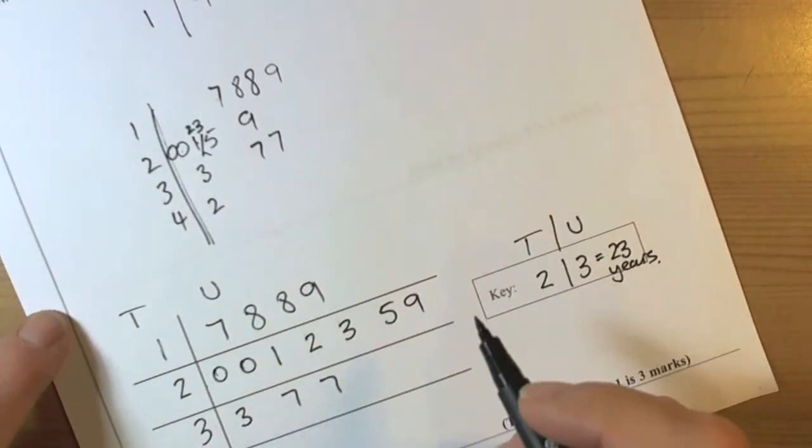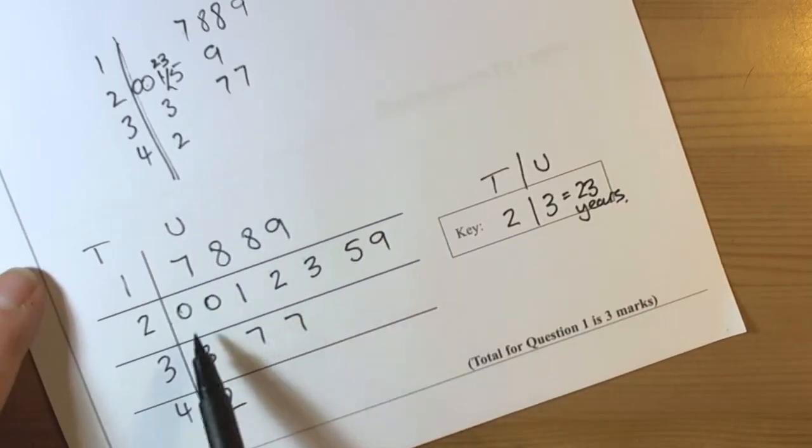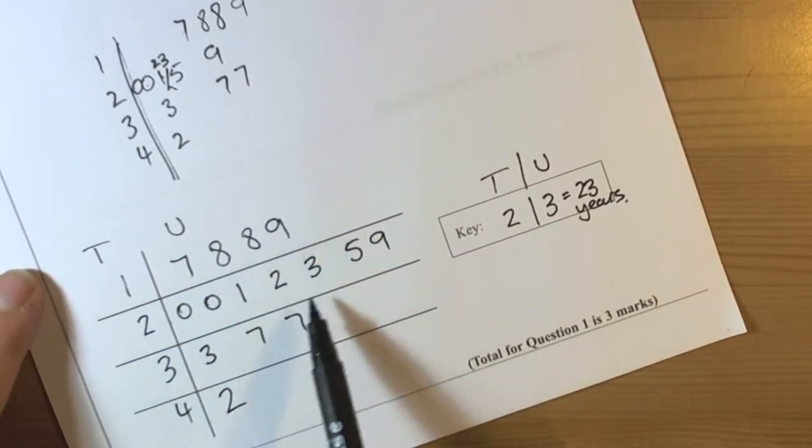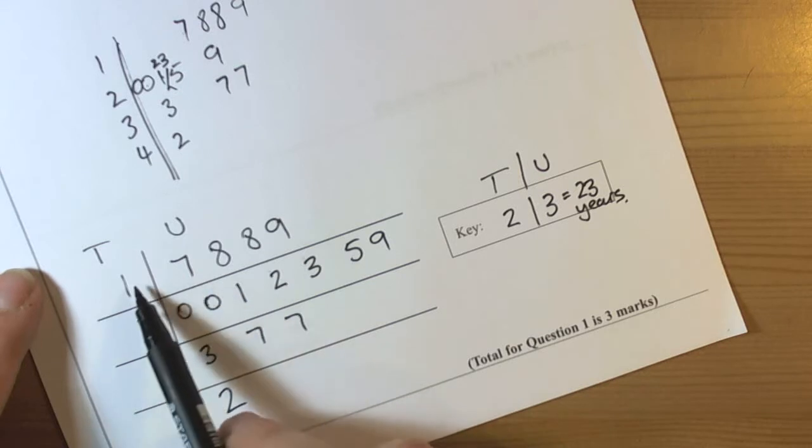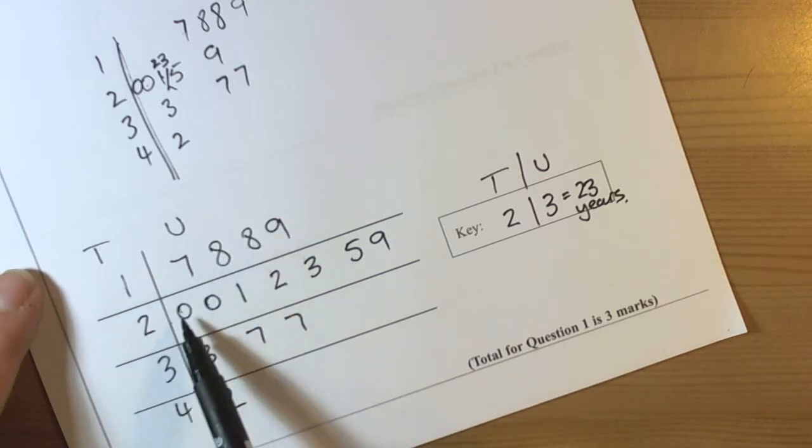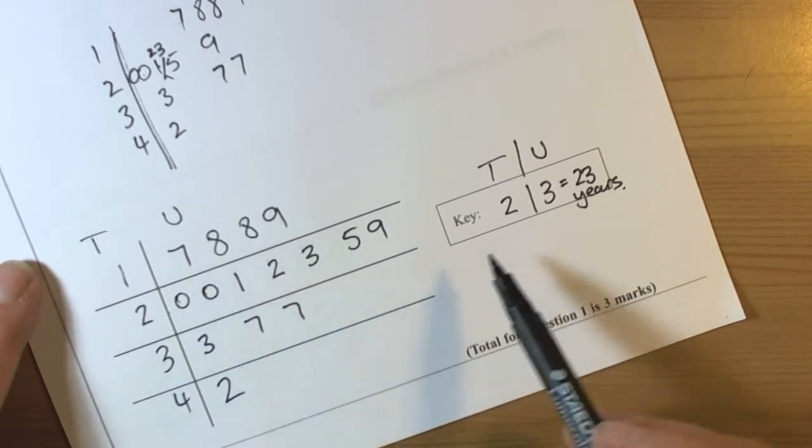Other things you can do with a stem and leaf diagram - they could ask you to do the mode. So we can look through here, we've got several numbers that have got 2 of each. So we've just got to remember that this 7 is 37. So if they ever ask you to do the mode, then there would be 18, there would be 20, and then there would be 37 in this table. So there would be 3 modes.